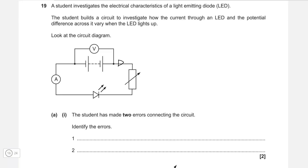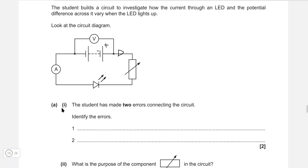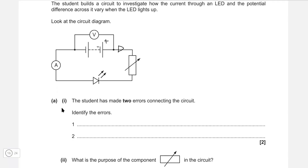A student investigates the characteristics of an LED — we have this circuit here. We need to identify two errors. First, a very common mistake is that the LED is connected the wrong way around. It should be connected positive to negative — the pointy bit pointing towards the smaller terminal. But here it's pointing towards the positive terminal, so it's connected the wrong way. The LED is connected negative to positive, which is incorrect.